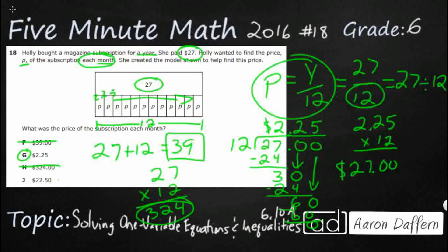And then there is answer J, 2250 — I have no idea how they got that with the 27 and 12. If you can figure that out, put the answer in the comments. But the correct answer is G, $2.25.